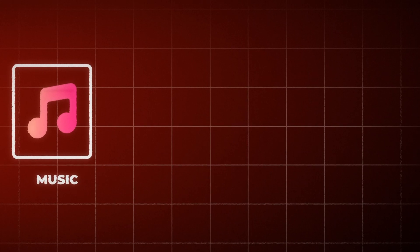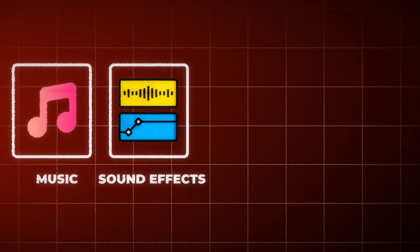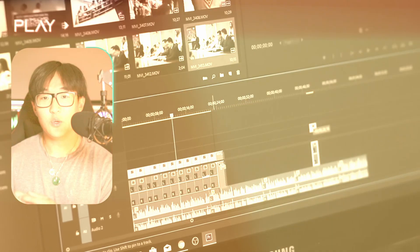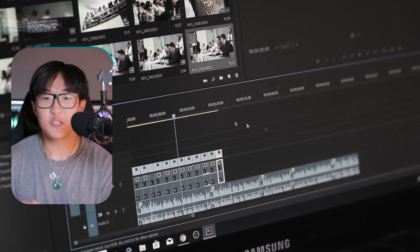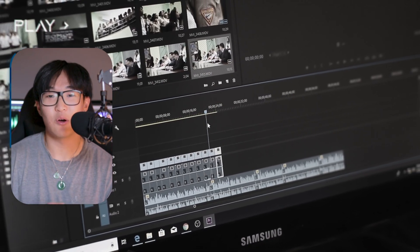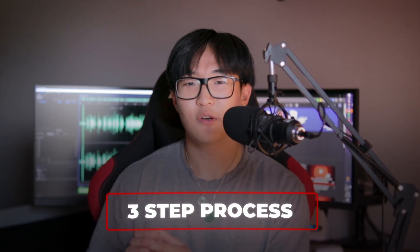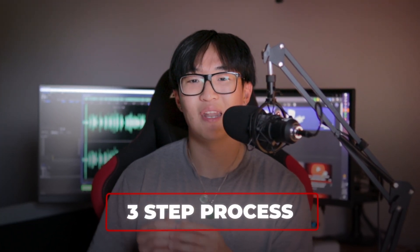There are so many different factors that you need to consider when editing a YouTube video, whether it be using the proper music, the proper sound effects, images and videos, and so on. You want to produce the best possible result, and it all comes down to how you can actually edit them. In this video, I'm going to be explaining a three-step process to ensure that you understand how to properly use assets when editing a YouTube video.